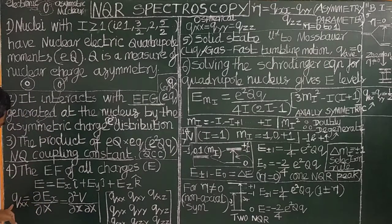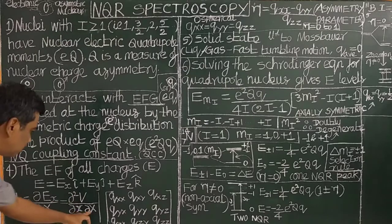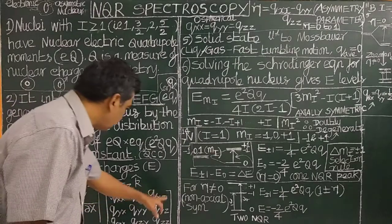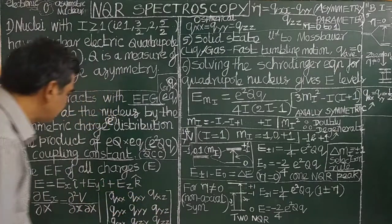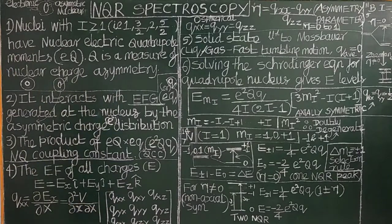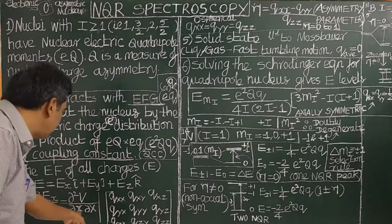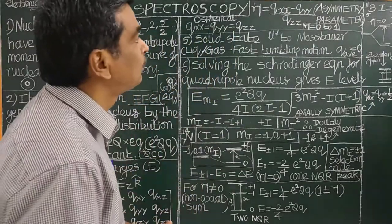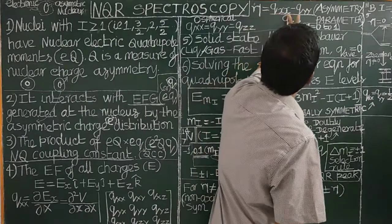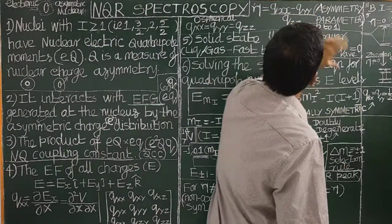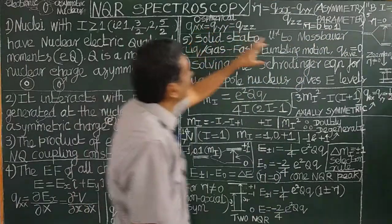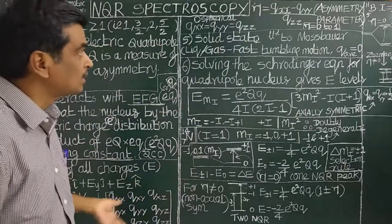Differentiating again gives the field gradient tensor components such as Qxy = ∂²V/∂x∂y. The nine components are arranged in a 3×3 matrix with diagonal elements Qxx, Qyy, Qzz. The asymmetry parameter η is given by η = (Qxx − Qyy) / Qzz, and its value lies in the range 0 to 1. For a spherically symmetric system, the asymmetry parameter η equals 0.